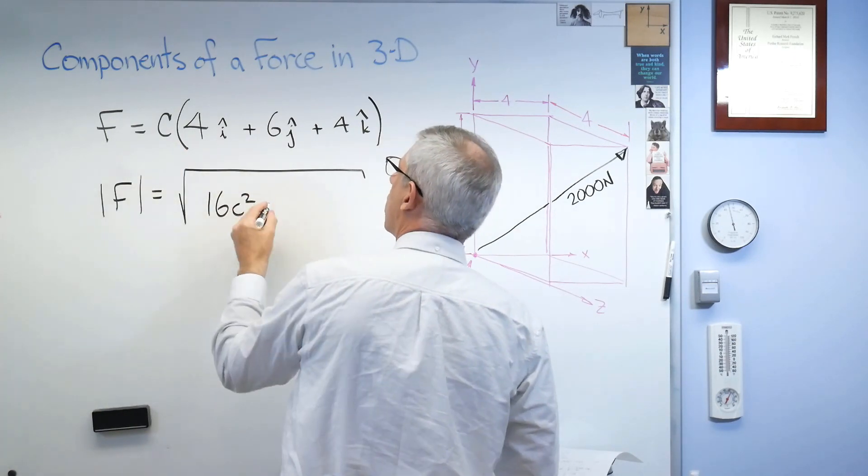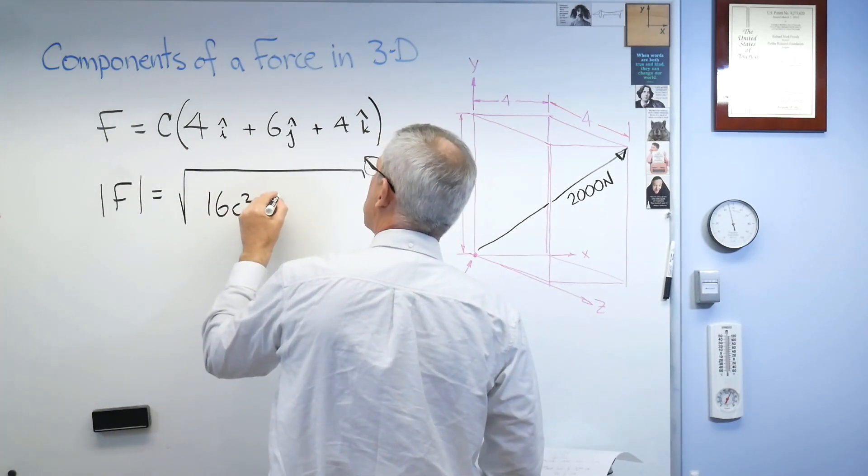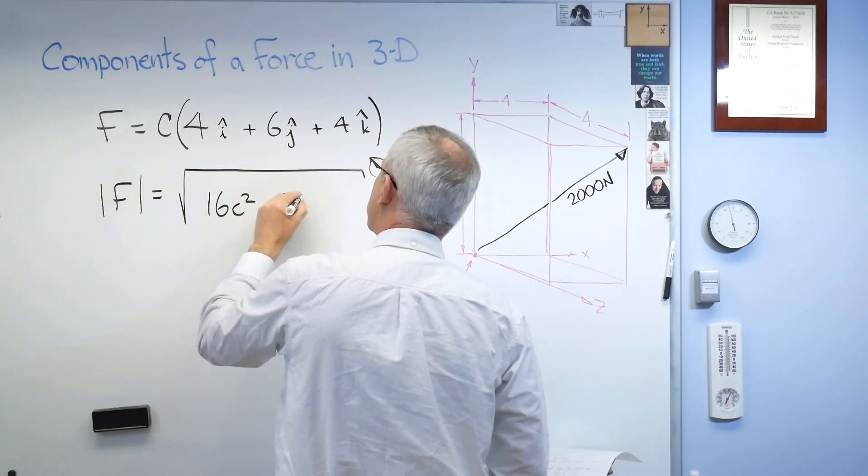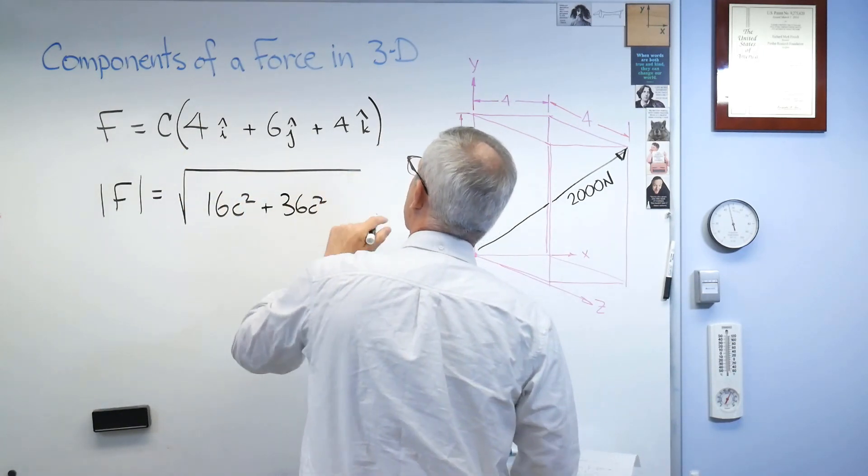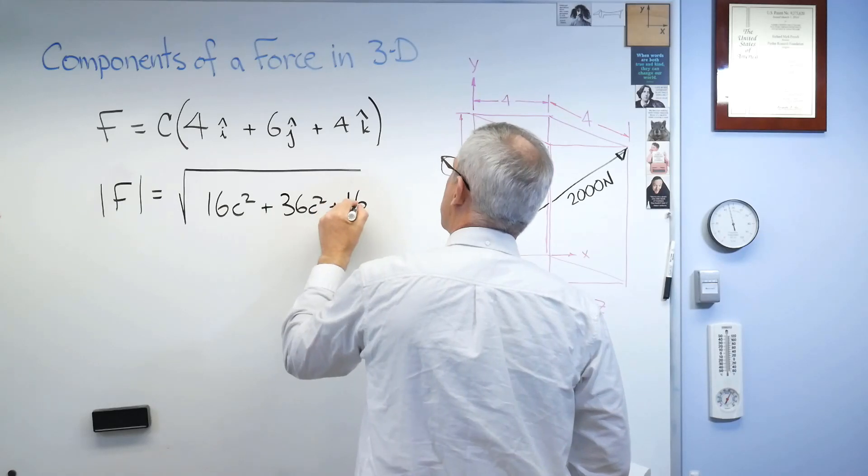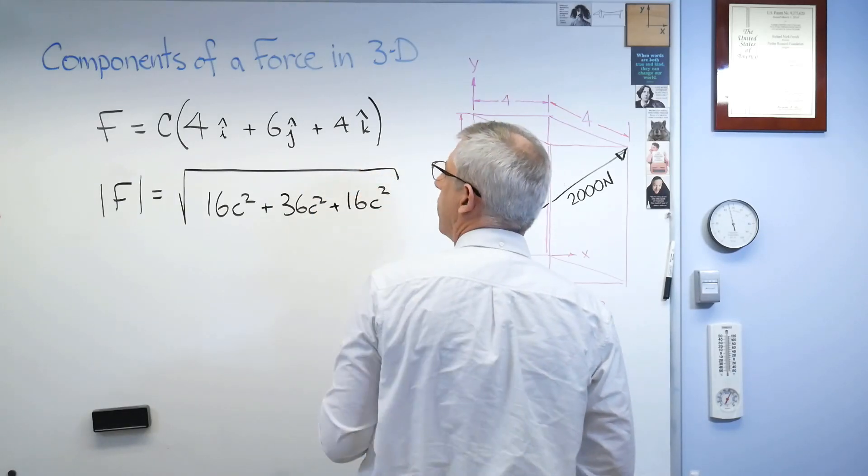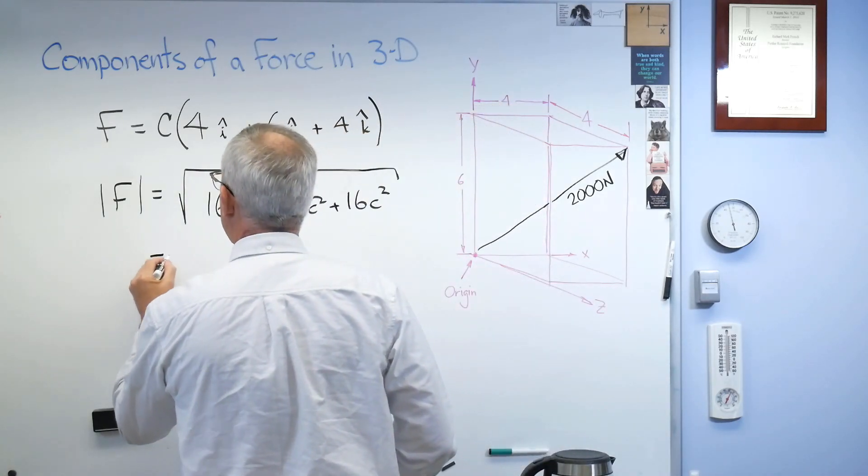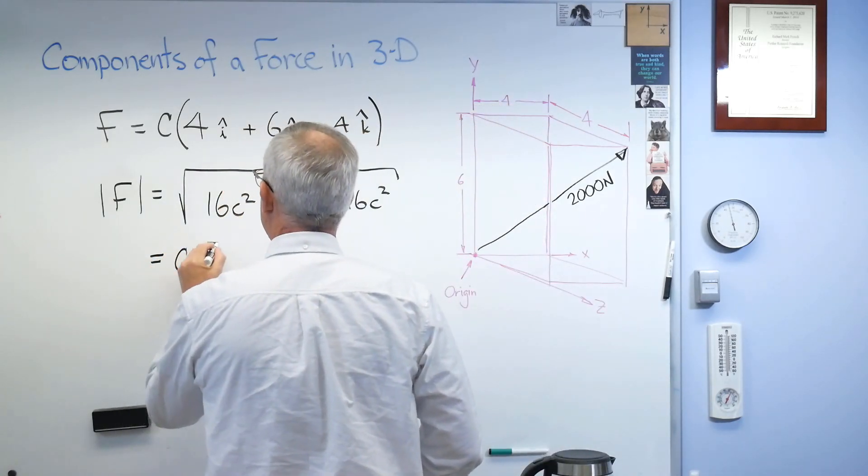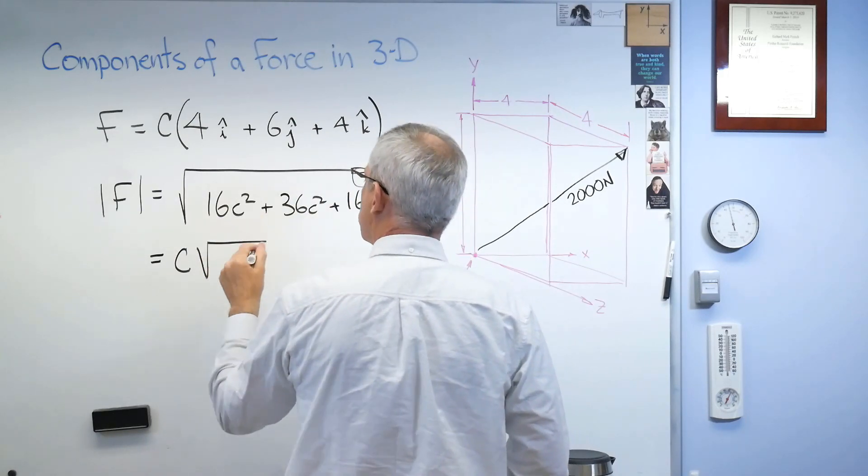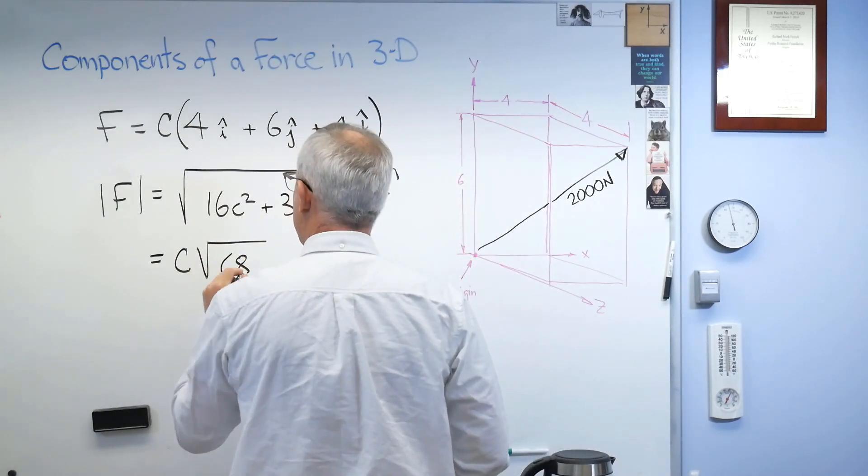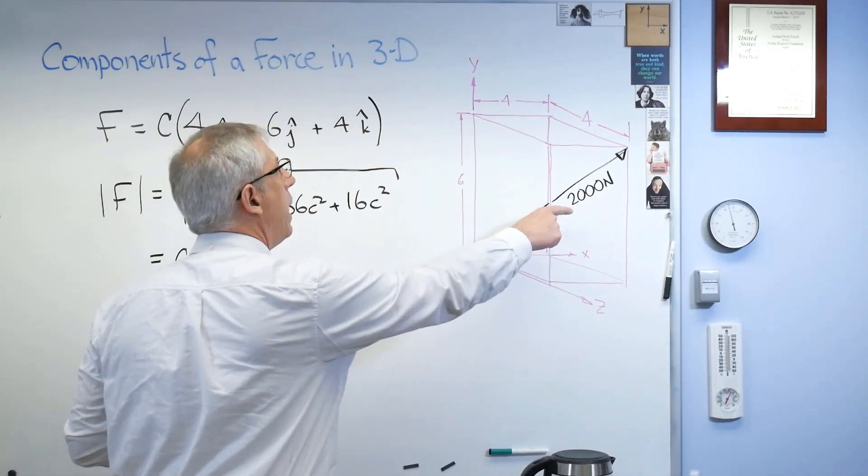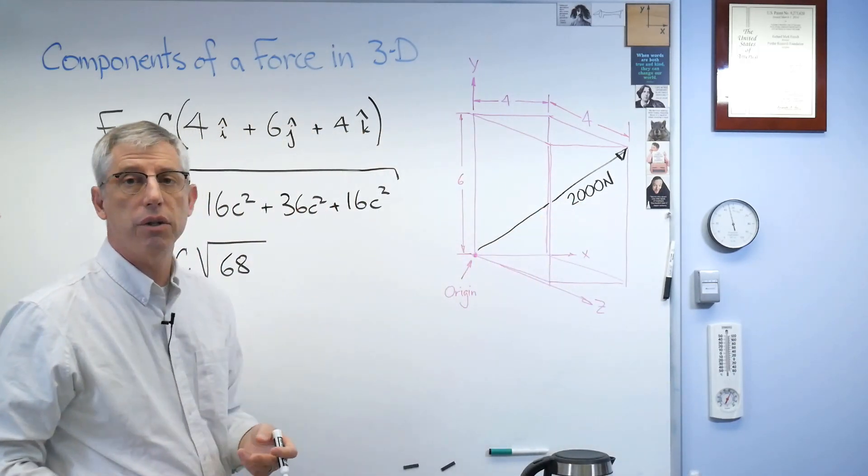So let's write this out. The magnitude of that is going to be the sum of the squares of all the components. Well, the first component is going to be 4c. The square of that is going to be 16c squared. 6c squared is going to be, 6c, the quantity squared, is going to be 36c squared, plus another 16c squared. Well, the c squareds all come out, so this is going to be like that, and add up 16 plus 16 plus 36, you get 68.